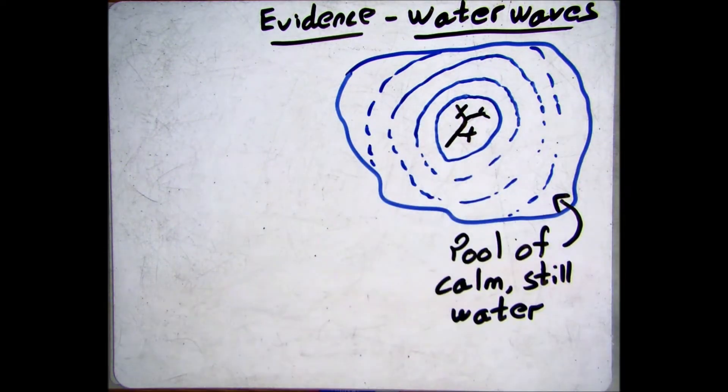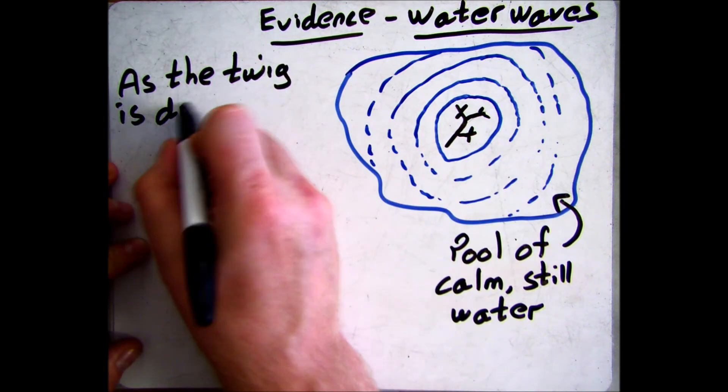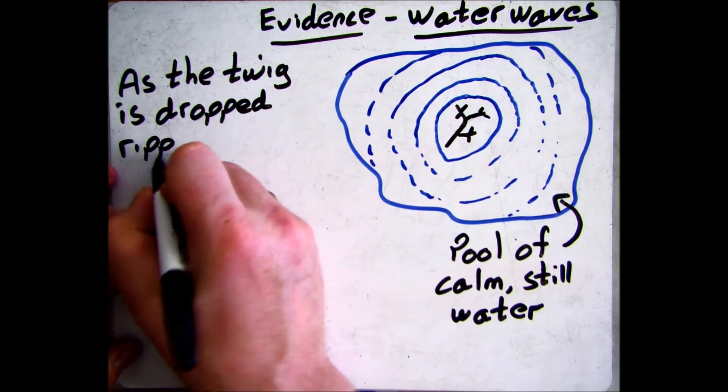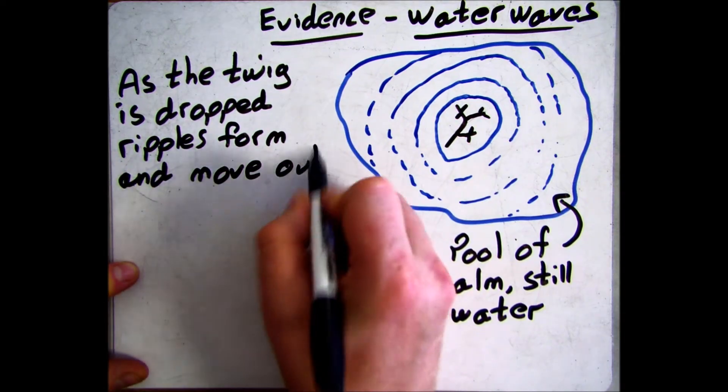This is our energy moving away from the source. But if this was a still calm pool of water, the twig wouldn't move. It would bob up and down but it wouldn't move outwards to the edges.